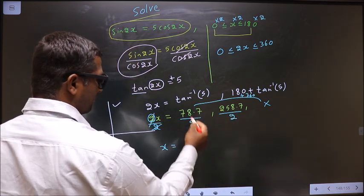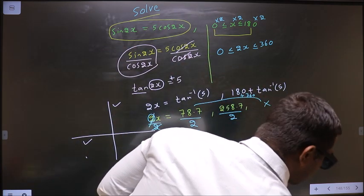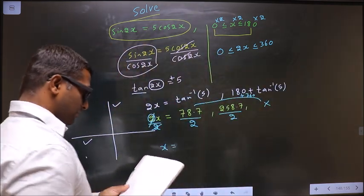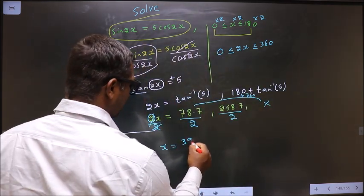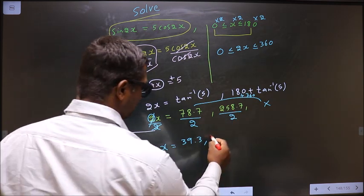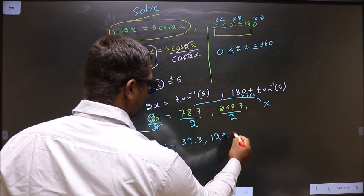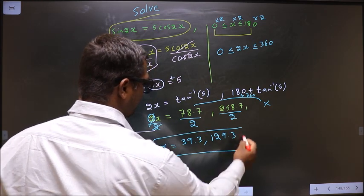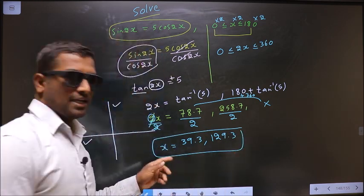So, we get x equal to 78.7 by 2, will result in 39.3. 258.7 divided by 2 is 129.3. This is our answer.